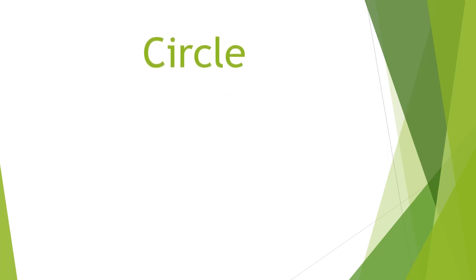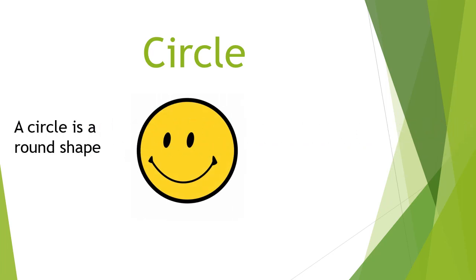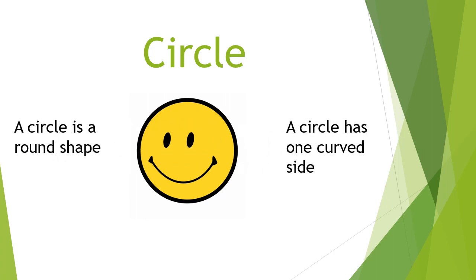The fourth two-dimensional shape is a circle. Children, you must be knowing how a circle looks like. This is a circle. It is round in shape. It has one curved side, and as you can see in the figure, it has no corners.